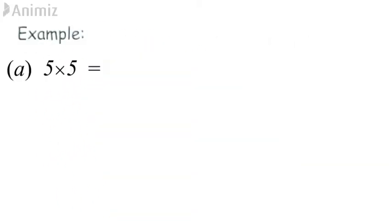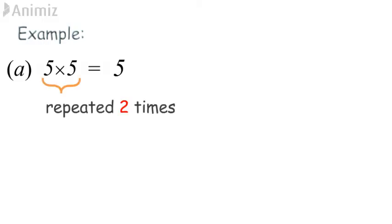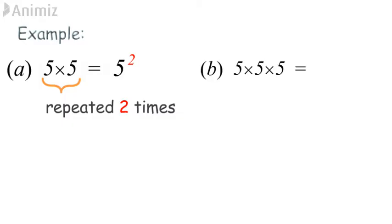Example A: since the base 5 is repeatedly multiplied 2 times, the base will be 5 and the index will be 2. Example B: since the base 5 is repeatedly multiplied 3 times, the base will be 5 and the index will be 3.